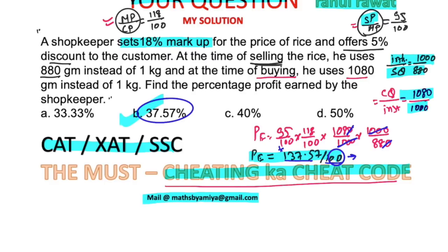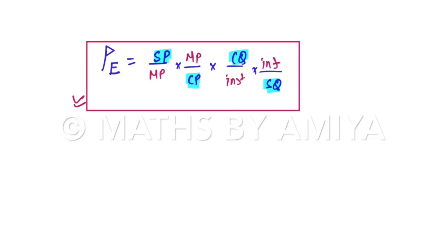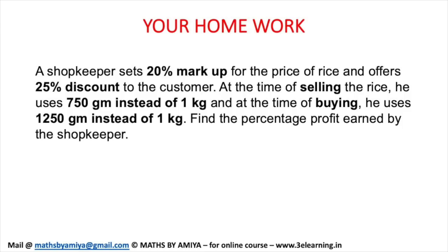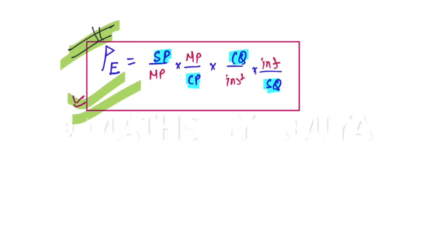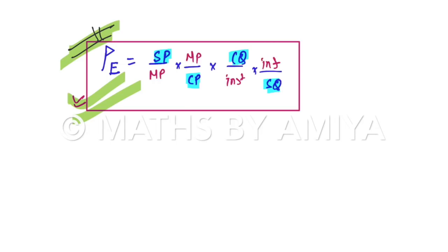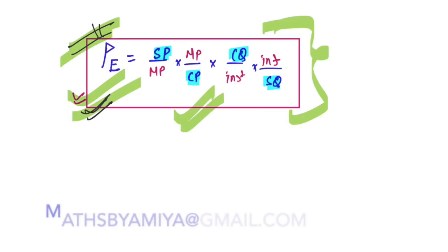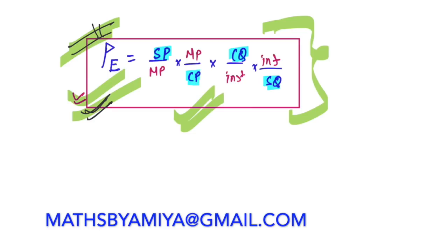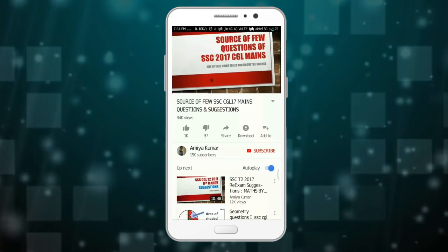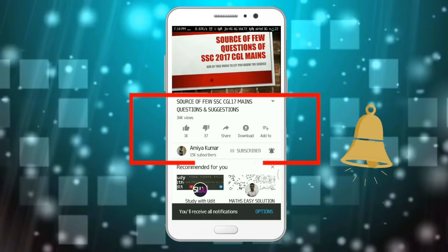The answer is option B, obtained using the Cheating Ka Cheat Code. Whenever you have a question on cheating with multiple cheating factors, use this formula. Your homework is in front of you — must solve it and post your answer in the comment box. If you have any doubts, rewatch each step. If you cannot solve a cheating question apart from adulteration using this code, either the question is wrong or you need to revisit the cheat code. Mail me if you need help. Happy learning, God bless you, and please subscribe and hit the bell icon.